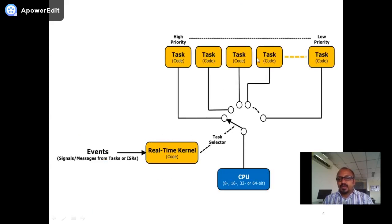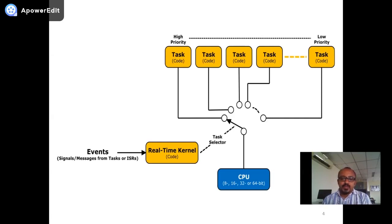The operating system handles the many different programs — which we call tasks — that are written for different functions. For example, display is one task, keypad is one task, sensor data accumulation is one task, controlling the actuators is one task. For every task we write one code. The CPU cannot execute all the code at the same time — it executes only one at a time. The operating system takes care of which task executes its code at a given time and switches from one task to another.